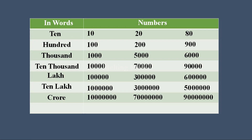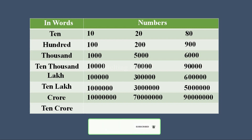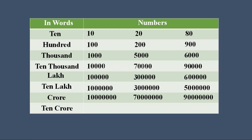Next, 10 crore — 10 crore means there should be 8 digits of zeros. Write 10 first, then crore means 7 zeros, so write 7 zeros; combining you can see 8 digits of zero, so it comes under 10 crore. Similarly, 80 crore: write 80 then 7 zeros — combining gives 8 digits of zero. 60 crore: write 60 then 7 zeros — combining gives 8 digits of zero, so it comes under 10 crore.